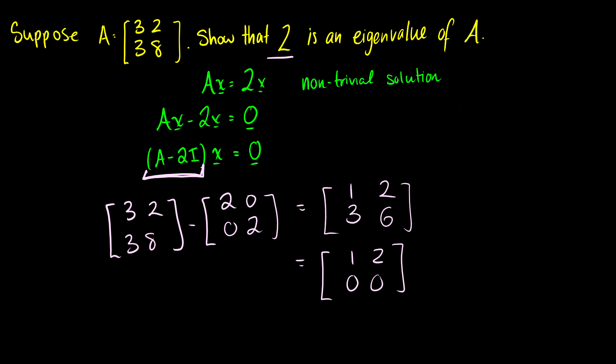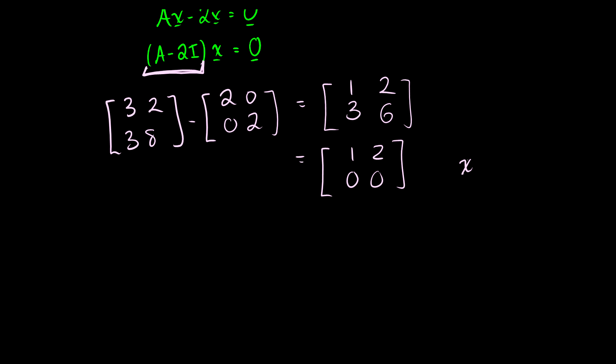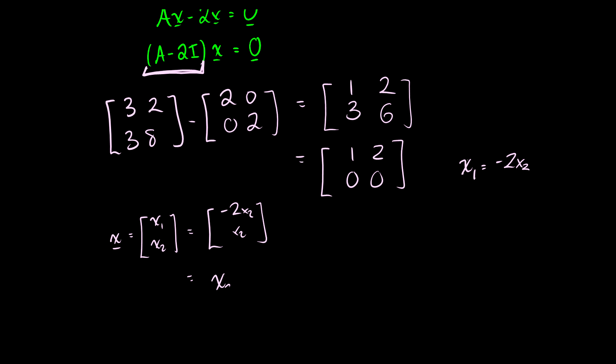We can take this further and find all eigenvectors corresponding to eigenvalue 2. From the row-reduced matrix, x1 equals -2 times x2. So the solution vector x = [x1; x2] equals x2 times [-2; 1]. The set of non-trivial solutions to (A minus 2I)x equals 0 is any vector of the form x2 times [-2; 1]. So the eigenvector corresponding to eigenvalue 2 for matrix A is any scalar multiple of [-2; 1].